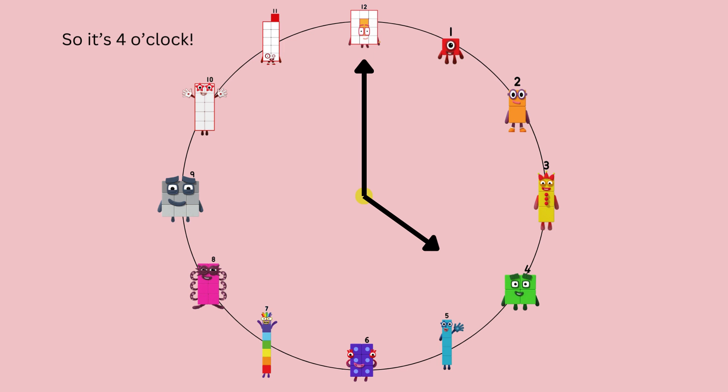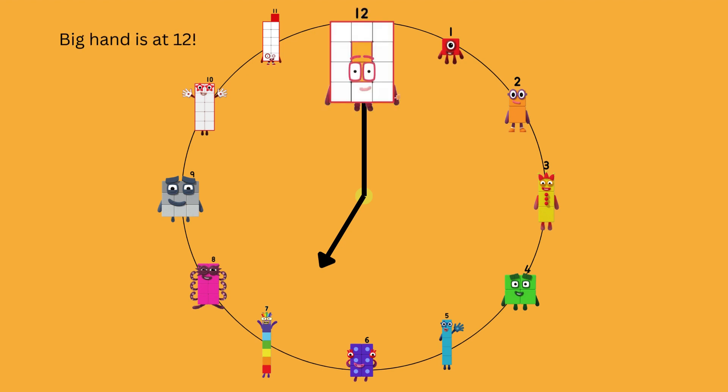Let's have another question. What time is it? Big hand is at 12. Little hand is at seven. So that's right. It's seven o'clock.